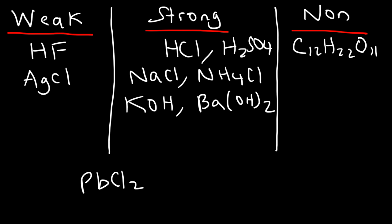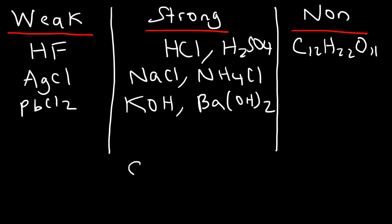What about lead(II) chloride? The halides are insoluble with silver, lead, and mercury. So lead(II) chloride, being an insoluble ionic compound, is going to be a weak electrolyte.